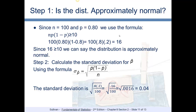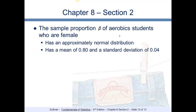Since the distribution is approximately normal, we calculate the standard deviation for p-hat: the square root of p times (1 minus p) divided by n. That gives us the square root of 0.80 times 0.20 divided by 100, which is the square root of 0.16 divided by 100, equal to the square root of 0.0016, which equals 0.04. So the sample proportion p-hat of aerobic students who are female has an approximately normal distribution with a mean of 0.80 and a standard deviation of 0.04.